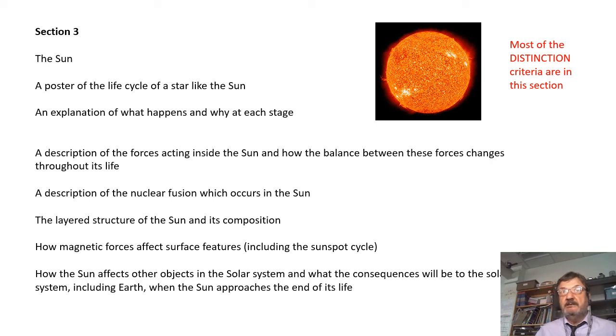And what the consequences will be to the solar system, particularly to the Earth, when the Sun reaches the end of its life. When the Sun starts to run out of fuel and it becomes a red giant, what will happen? What effects will it have on the rest of the solar system, particularly on Earth? Do a good job of that. In fact, as I said, Section 3 is distinction stuff, so you need to do a good job of it if you're after a distinction. Plenty of detail, plenty of diagrams, lots of good explanation. And that's that.